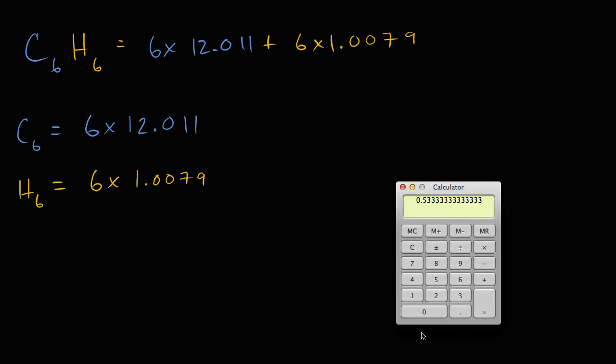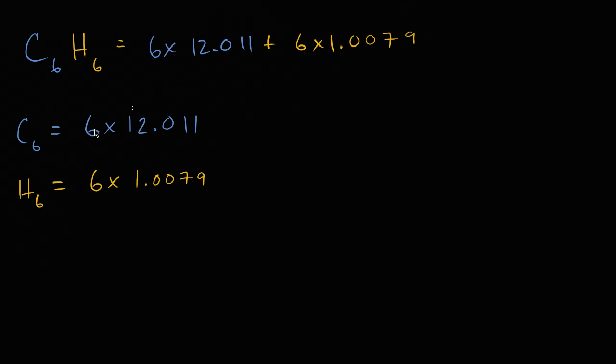Well, let's see. Let's get a calculator out. So 12.011 times six gives us 72.066. So this right over here is 72.066.